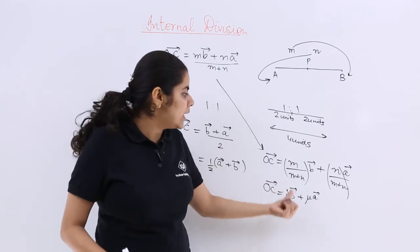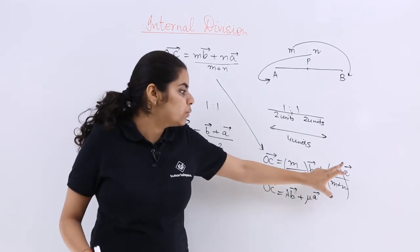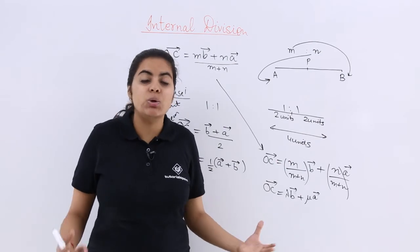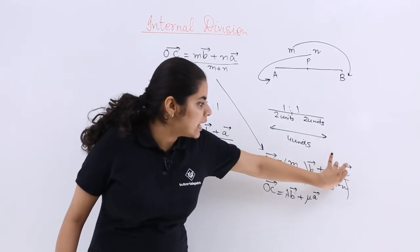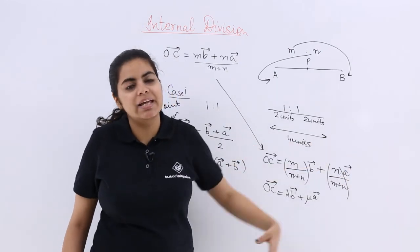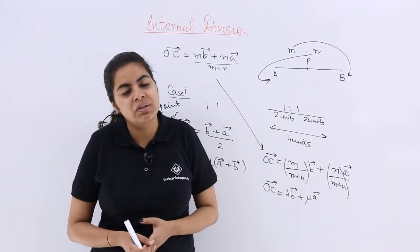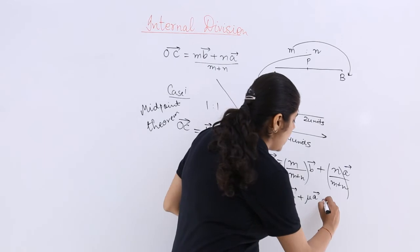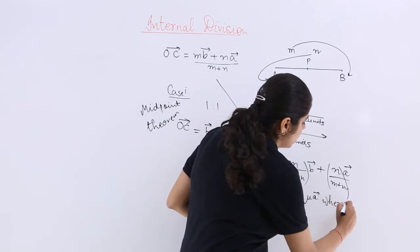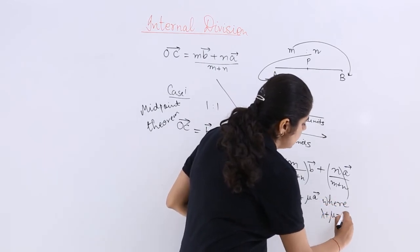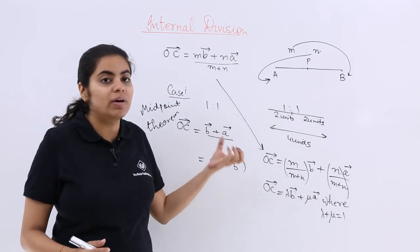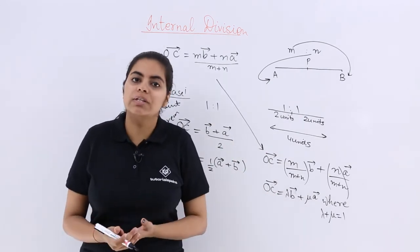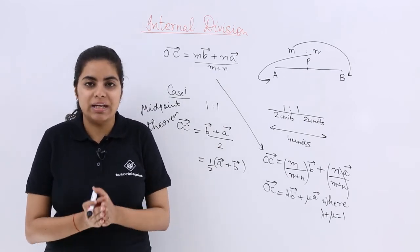So Lambda plus Mu is what? If you add M upon M plus N, N upon M plus N, you get what? You get 1. So that is very important where your Lambda plus Mu is equal to 1. So this is also one important case or one important corollary of this particular section formula that we have started.